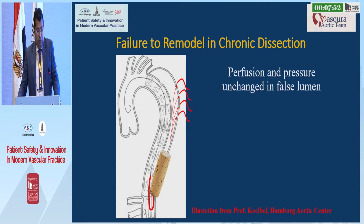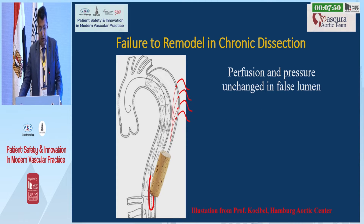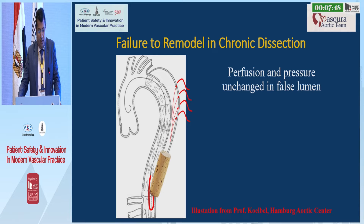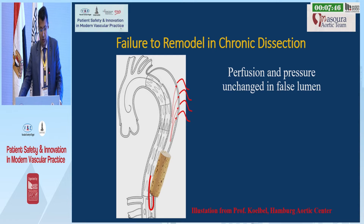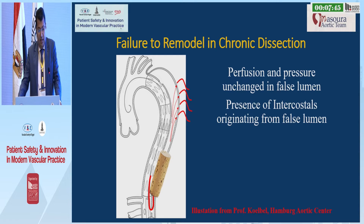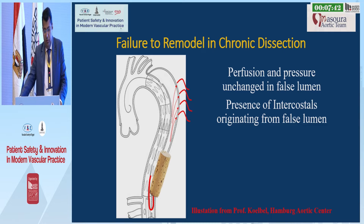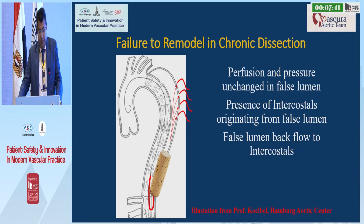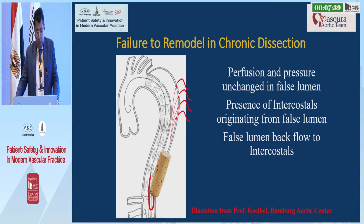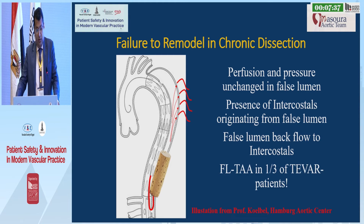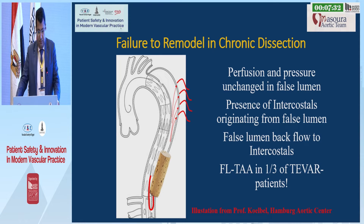Failure to remodel in chronic dissection is due to perfusion and peripheral pressure unchanged in the false lumen, the presence of intercostals originating from the false lumen, and false lumen backflow to the intercostals, leading to false lumen thoracic aortic aneurysm in one-third of T-VAR patients.